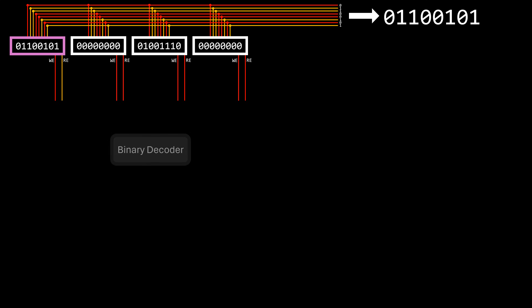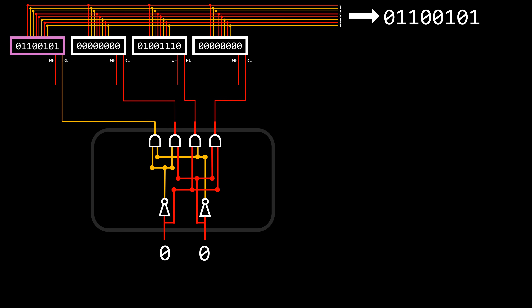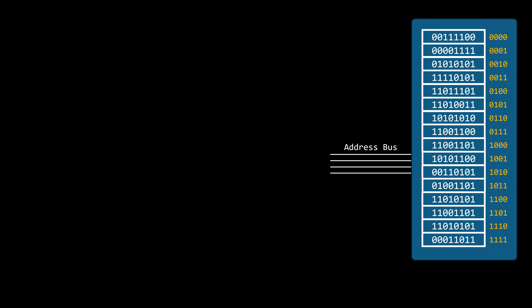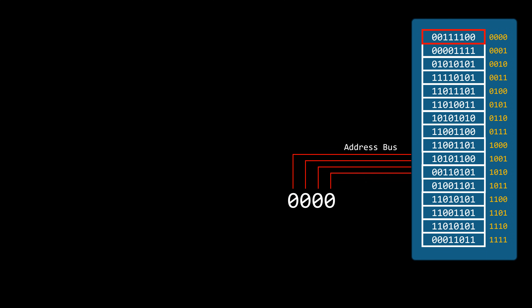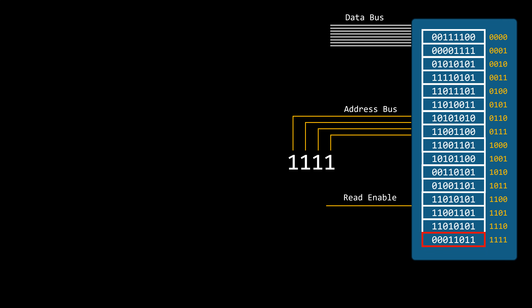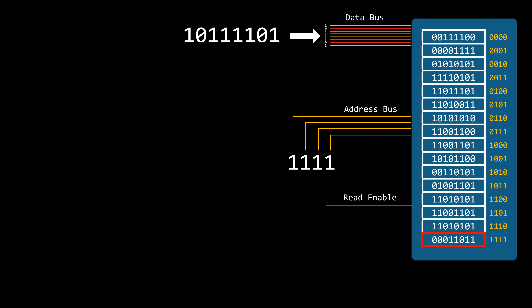Fortunately, we already know about the binary decoder, which can electronically select between multiple options. Now, let's talk a bit about memory. In the previous episode, we defined memory as an array of bytes. Each byte can be selected by inputting its position through an address bus. A data bus alongside a read-enable input can be used to read the value stored in the selected byte. This same data bus can also be used as an input, alongside a write-enable input, to overwrite the value at the provided address.